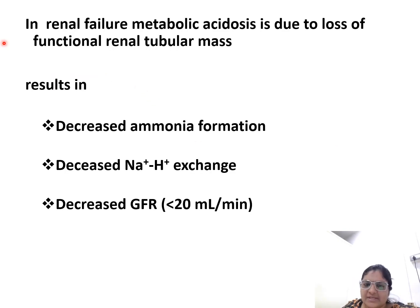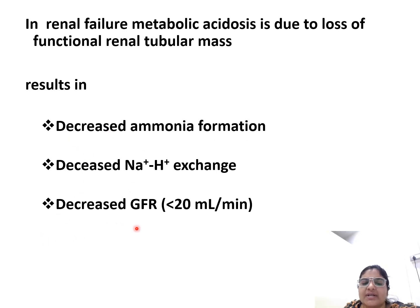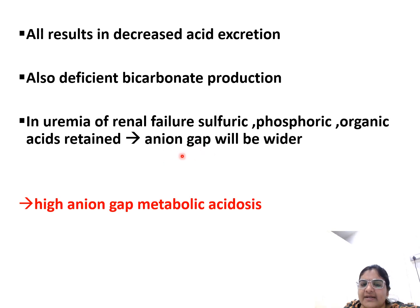Why is there high anion gap metabolic acidosis in this patient? In renal failure, metabolic acidosis results from loss of functional renal tubular capacity, leading to decreased ammonia formation, decreased sodium-H+ exchange, and decreased bicarbonate reabsorption. This results in decreased acid excretion and deficient bicarbonate regeneration. Consequently, nitrogenous, sulfuric, and phosphoric organic acids are retained, raising the anion gap — hence high anion gap metabolic acidosis.